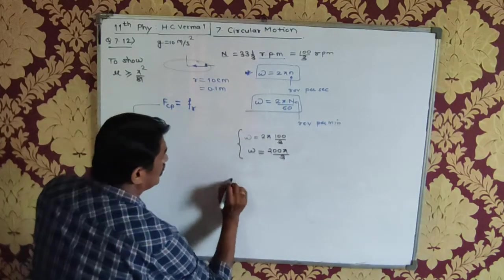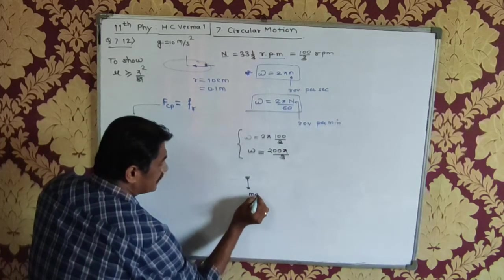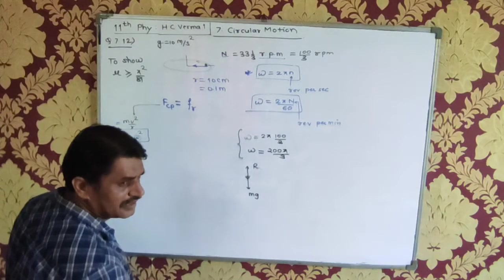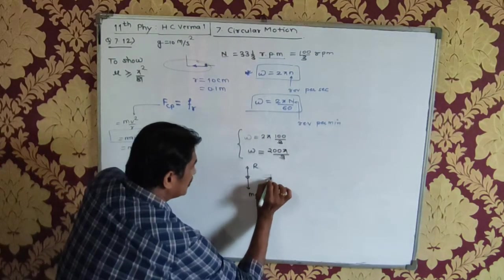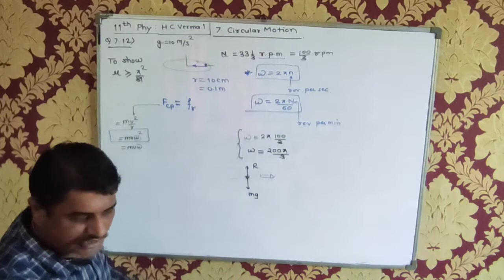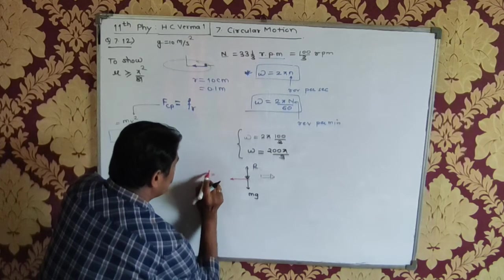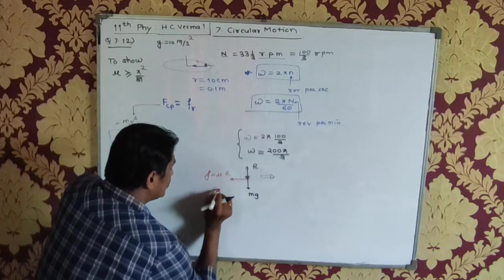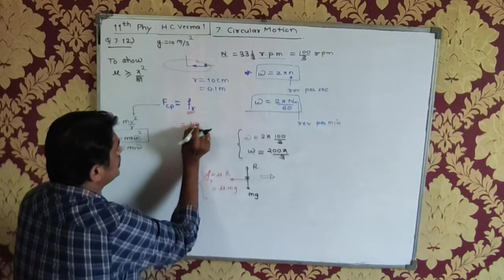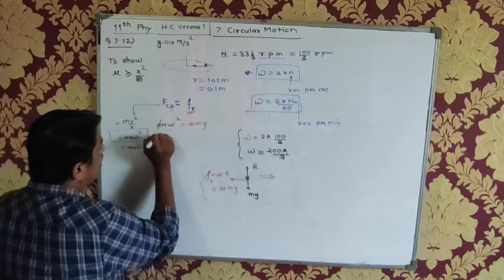Now considering friction: if the mosquito is sitting on the disk, its weight mg acts downward and normal reaction R acts upward. The tendency of the mosquito is to be thrown outward. The frictional force acts inward, toward the center. The limiting force of friction is μ times the normal reaction, which equals μmg. The centripetal force is mRω², and m gets cancelled.